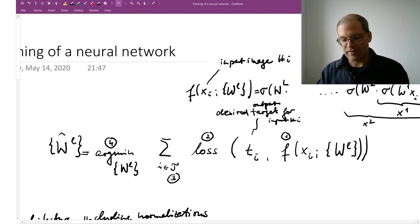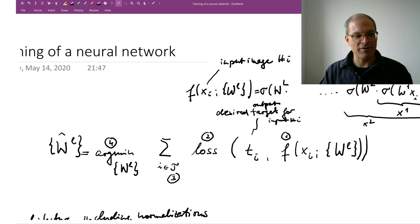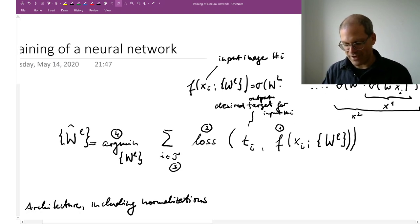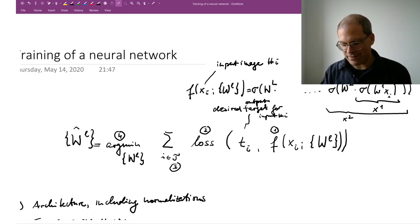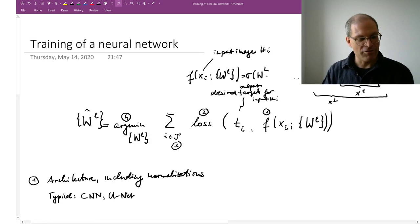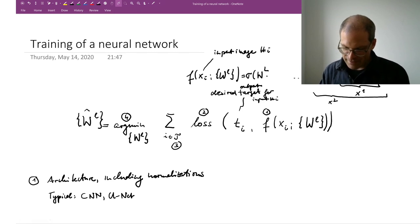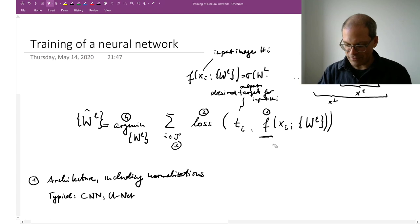So you know this equation, in a way it says it all and in a way it says nothing, because there are many, many, many choices here. I mentioned these terribly many hyperparameters that users have to choose. Let's discuss a few choices with you now and this is the last thing we're going to do today.